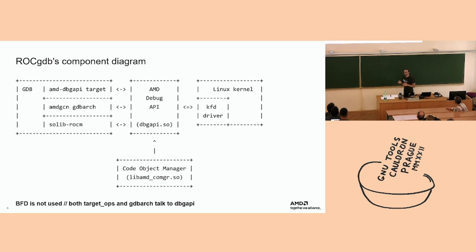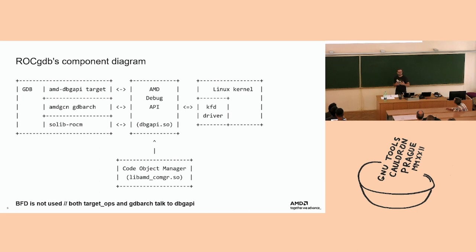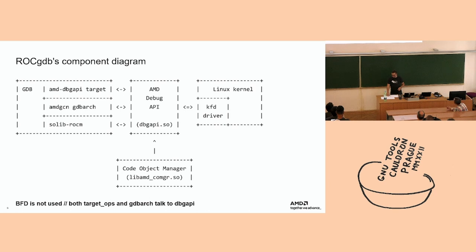This is the high-level view of how ROC GDB talks to other components to debug GPU code. To control execution, everything goes through the Linux kernel's KFD driver (now part of the AMD GPU driver), which provides an interface for user space to control GPU debugging. In front of that is the AMD Debug API library, which hides the complexity of scheduling and event processing, and is also used by other debuggers and profilers.